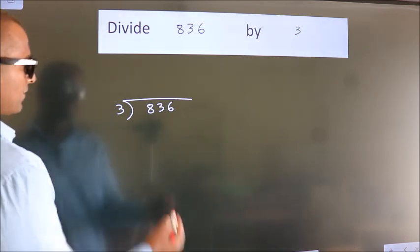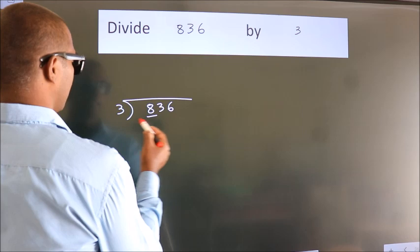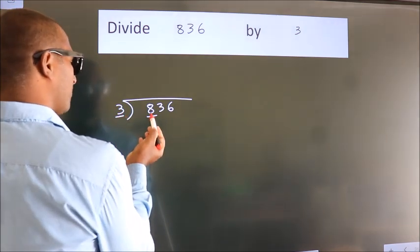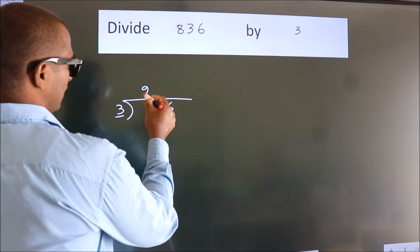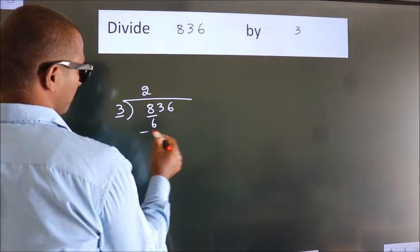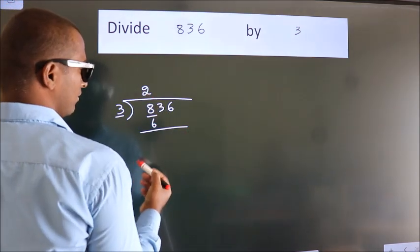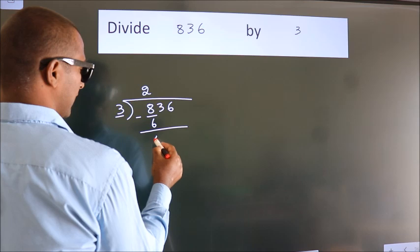Next. Here we have 8, here 3. A number close to 8 in the 3 table is 3 times 2 equals 6. Now we should subtract. We get 2.